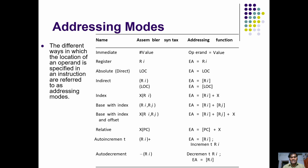Next is index addressing mode. Here a register contains some location, and that location contains some data, combined with an offset value. For example, if the data is available at location 1000 but the register contains 997, and X represents the offset value of 3, then 997 plus 3 gives location 1000, and the data at location 1000 is accessed by the processor. This way of accessing is called index addressing mode.